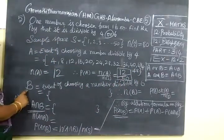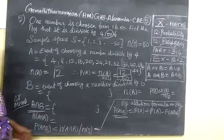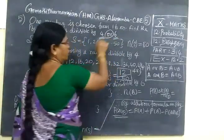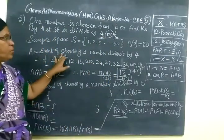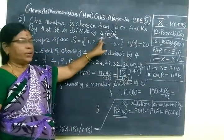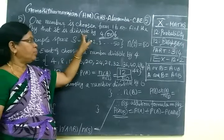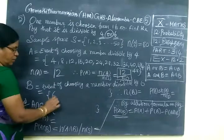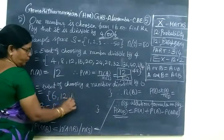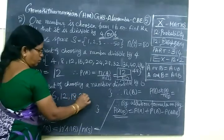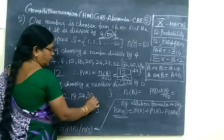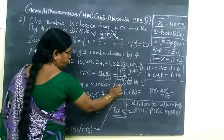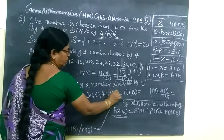Now go to the next. Next we find B. The event B is divisible by 6. First we have selected the numbers which are divisible by 4. Next we are selecting the numbers divisible by 6. So divisible by 6 means 6, 12, 18, 24, 30, 36, 42, 48.